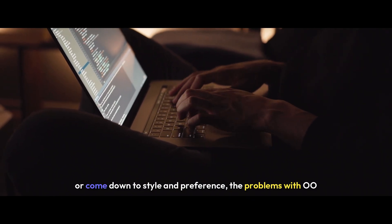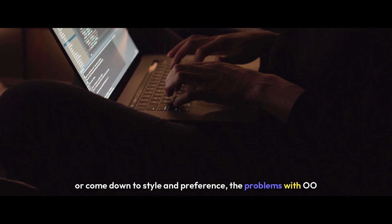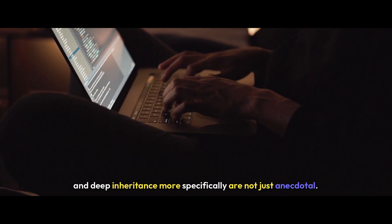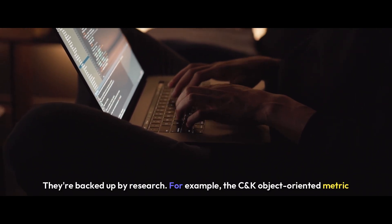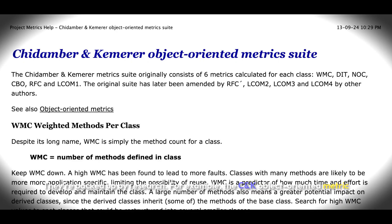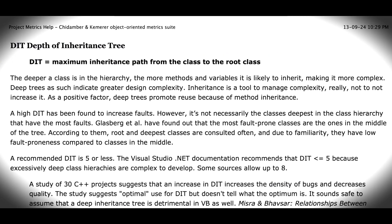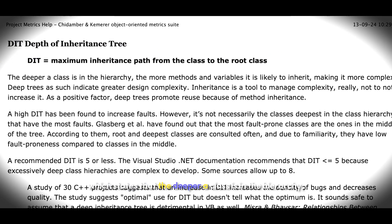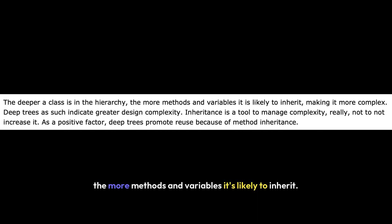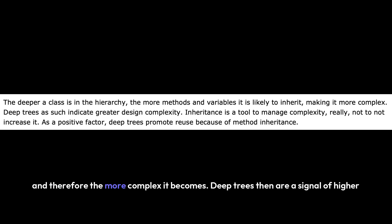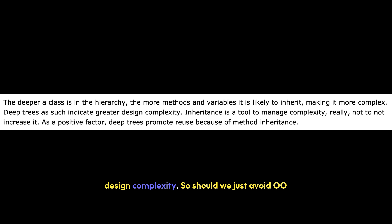While many issues in software are open to debate or come down to style and preference, the problems with OO and deep inheritance more specifically are not just anecdotal — they're backed up by research. For example, the CK object-oriented metric suite includes the Depth of Inheritance Tree metric, which states that the deeper a class is in the hierarchy, the more methods and variables it's likely to inherit, and therefore the more complex it becomes. Deep trees, then, are a signal of higher design complexity.